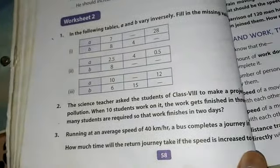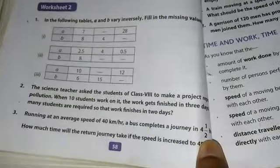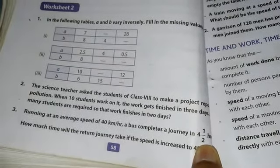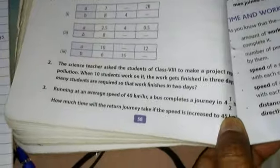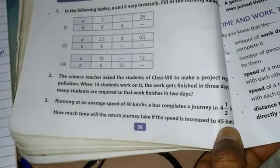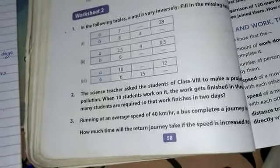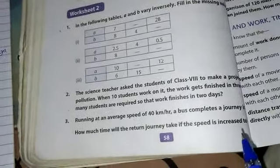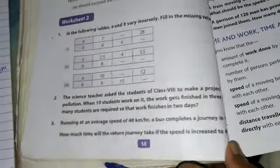It's given that if the bus is traveling at 40 km per hour speed, the bus takes four and a half hours to complete the journey. Then how much time will the return journey take if the speed is increased to 45 km? In return journey, the speed increased to 45 instead of 40.